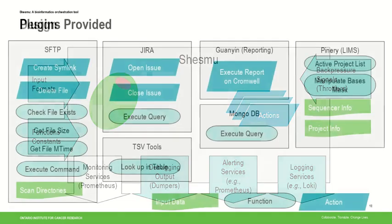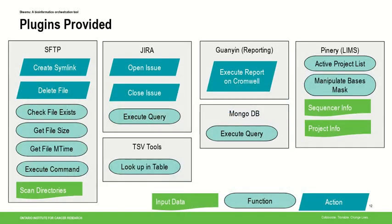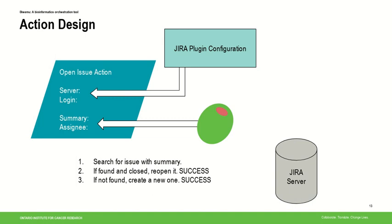Out of the box we provide a variety of plugins: SFTP plugins, Jira, a bunch of text file support, our reporting system Guanyin, MongoDB, and our LIMS abstraction Pinery. The design of actions is such that each action can get information from two places: from the configuration for that plugin — for example, what server to use and how to log into it — and from the OLIVs themselves, so the Olive can generate summary and assignee information in whatever way it pleases.